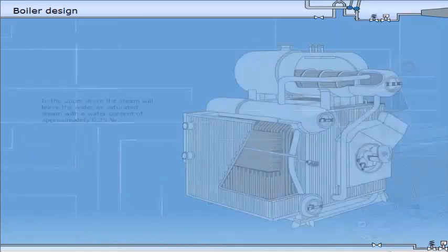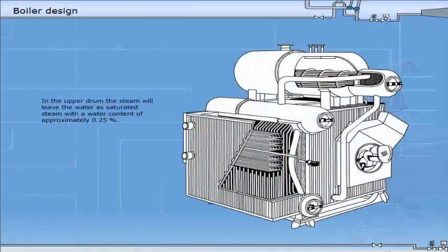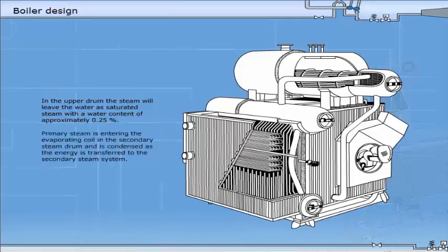In the upper drum, the steam will leave the water as saturated steam with a water content of approximately 0.25%. Primary steam is entering the evaporating coil in the secondary steam drum and is condensed as the energy is transferred to the secondary steam system.